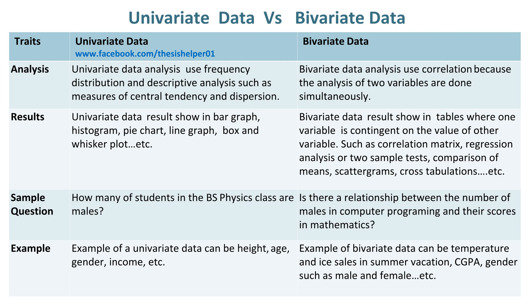A sample question of Univariate Data is: how many students in the BS Physics class are males? Whereas, a sample question of Bivariate Data is: is there a relationship between the number of males in computer programming and their scores in mathematics?